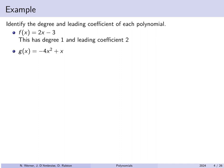For g(x) = −4x² + x, the degree is 2 — the highest power of x is the second power — and the leading coefficient, the number multiplying x², is −4.